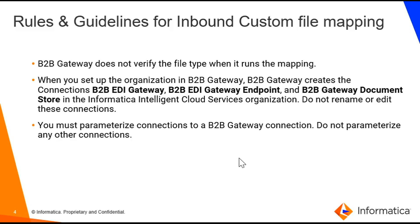We have a few rules and guidelines for inbound custom file mapping. First, B2B does not verify the file type when it runs the mapping. When you set up the organization in B2B Gateway, it creates some connections like B2B ETI Gateway, B2B ETI Gateway Endpoint, and Document Store in that IICS organization. Lastly, you must parameterize all connections related to the B2B Gateway connection.